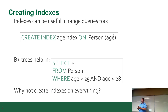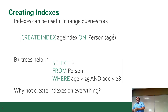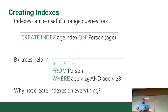Which leads to the question: why not index everything? This is one of the first mistakes junior database developers make. They think, 'My database is a little slow, I'll create an index. Oh, this query is slow, I'll create an index that matches this WHERE clause.'